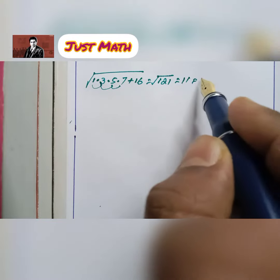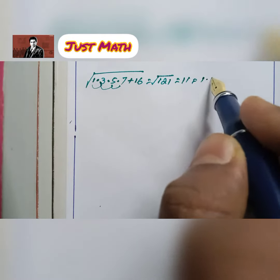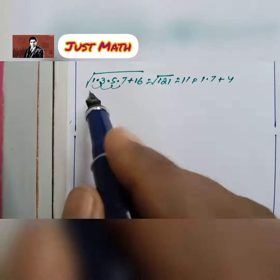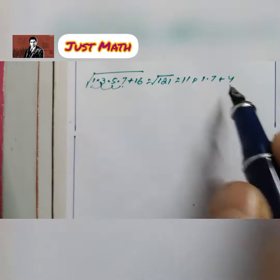11 is 1 × 7 plus 4. First number multiply last number plus 4.